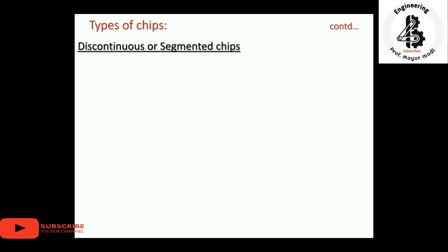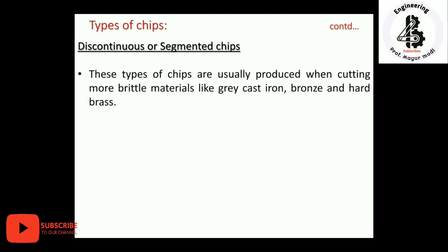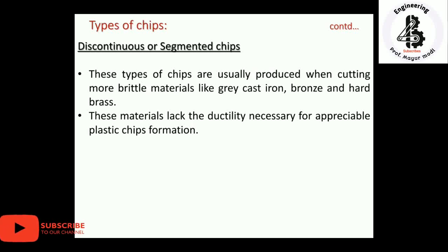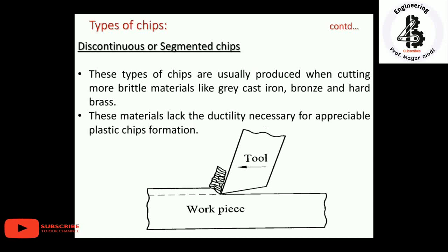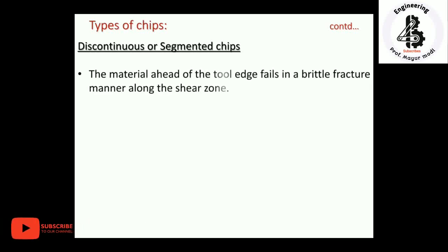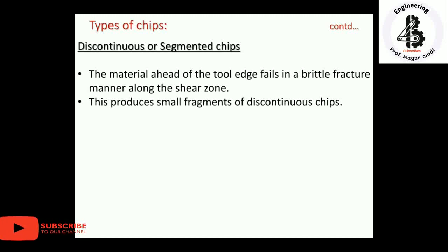The last type is discontinuous or segmented chips. This type of chip is usually produced when cutting more brittle materials like grey cast iron, bronze, and hard brass. These materials lack the ductility necessary for appreciable plastic chip formation. When the tool is fed against the workpiece, the material does not elongate; instead, the material ahead of the tool edge fails in brittle fracture along the shear zone, and the removed material is in the form of segmental pieces, generating discontinuous chips.